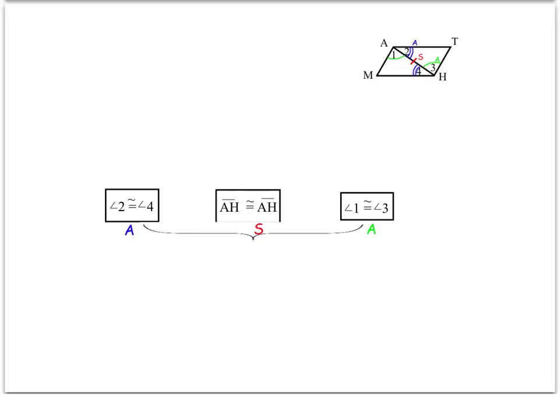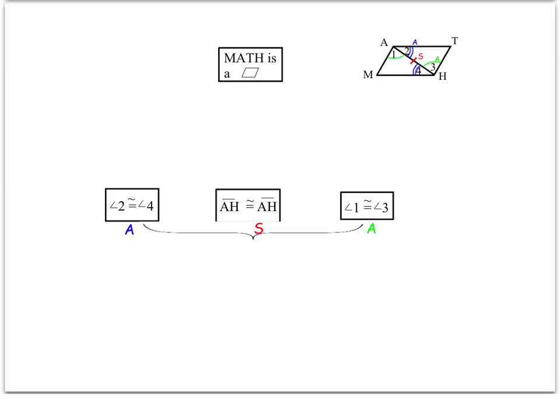From here you can work either top or bottom — it doesn't matter. I'm going to start on top with the given statement: MATH is a parallelogram. That given statement is going to be at the very top. It will help me decide how I got these three congruent pieces. The given statement — MATH is a parallelogram — doesn't directly get me to say that angle 2 is congruent to angle 4, AH is congruent to AH, or angle 1 is congruent to angle 3. So I need to use the definitions, postulates, and theorems on my DPT sheet to get there.